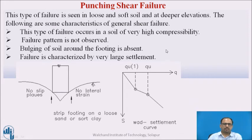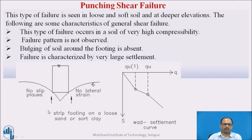The third type is punching shear failure, which is seen in loose or soft soil and at deeper elevations. This failure occurs in soil of very high compressibility. No clear failure pattern is observed, and bulging of soil around the footing is absent. Failure is characterized by very large settlement.